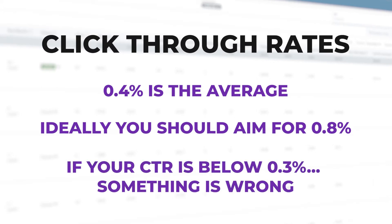If your click-through rate is below 0.3%, it means something's wrong. Usually if it's below 0.3%, it means either your audience is incorrect or your ads just aren't connecting — your offer isn't connecting with your audience, they just don't care enough.